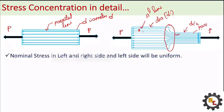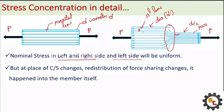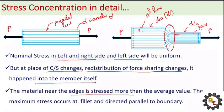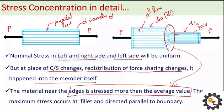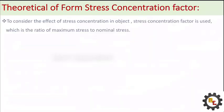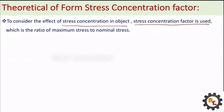A factor is introduced to find out this stress, called the stress concentration factor. The nominal stress on the left and right sides will be uniform. But at the place where the cross-section changes, redistribution of force sharing occurs. The material near the edge is stressed more than the average stress value, and the stress is increased more than the average value at the area-changing place. The maximum stress occurs at the fillet and is directed parallel to the boundary.